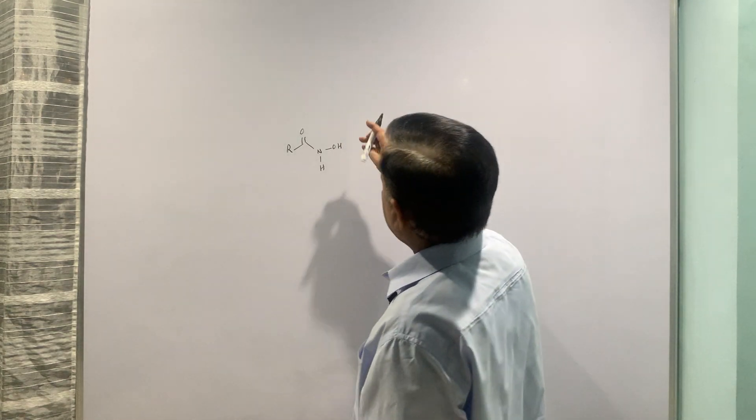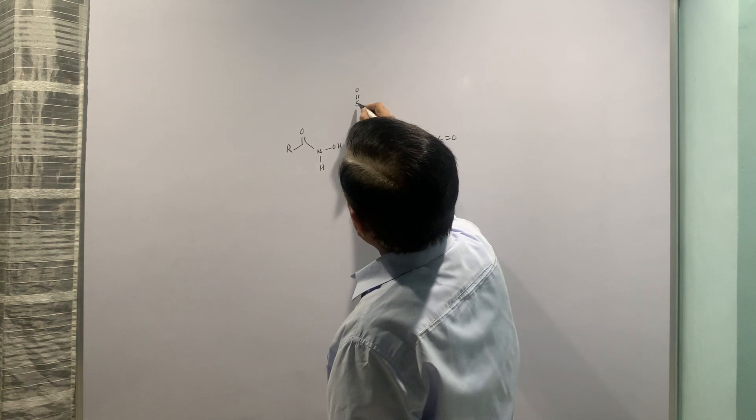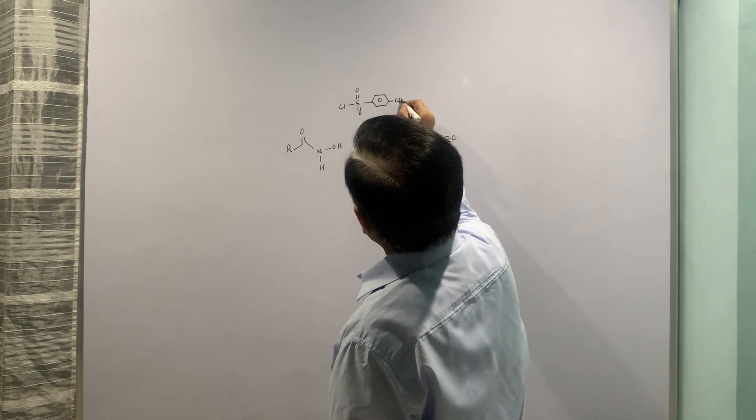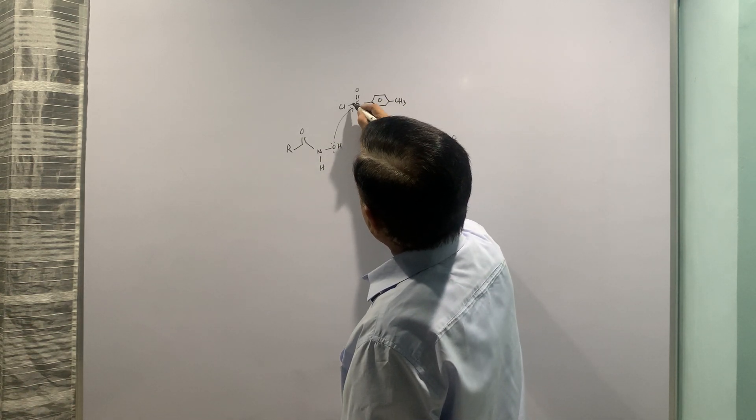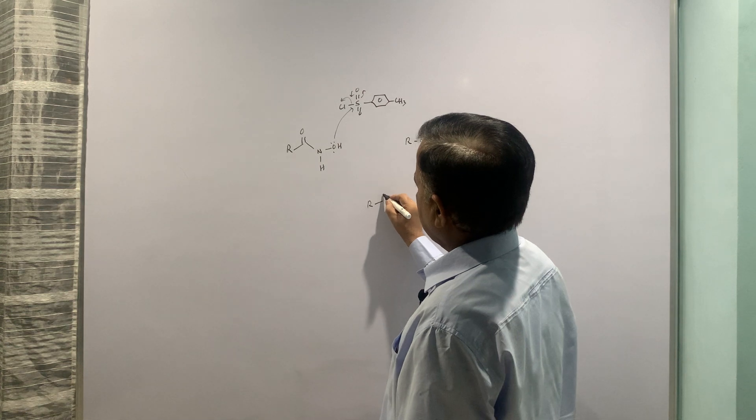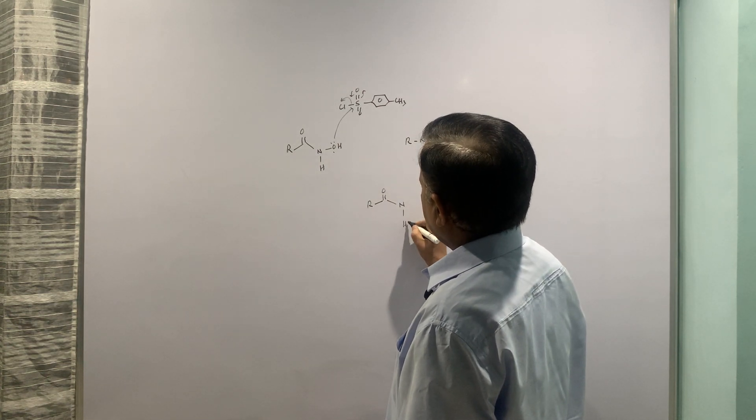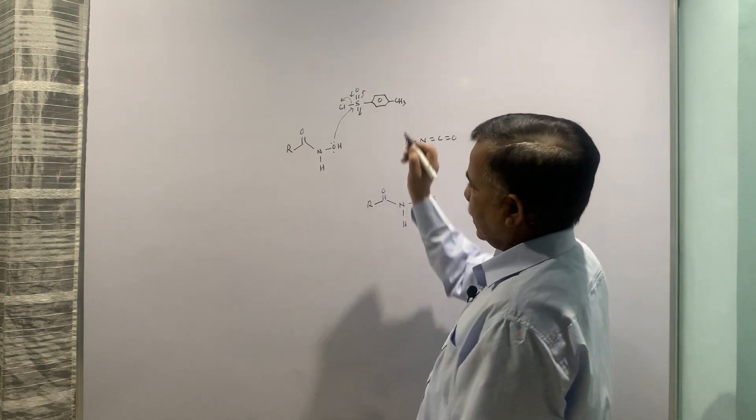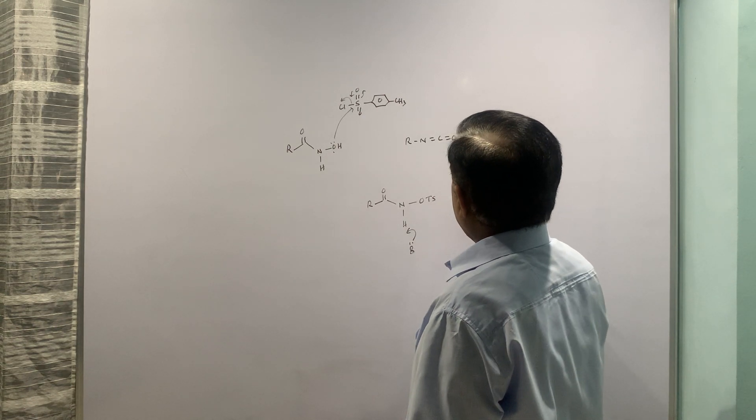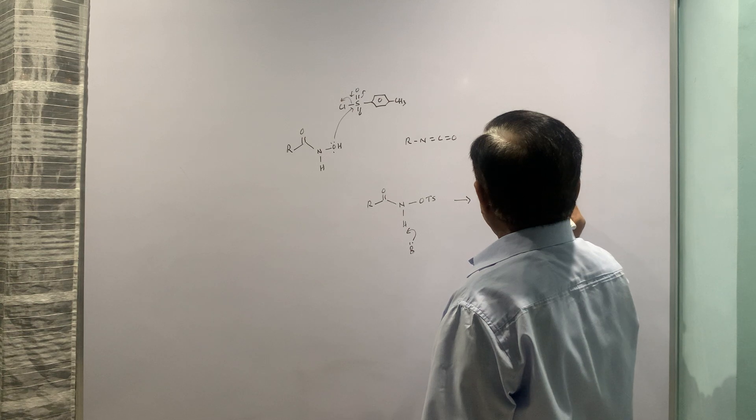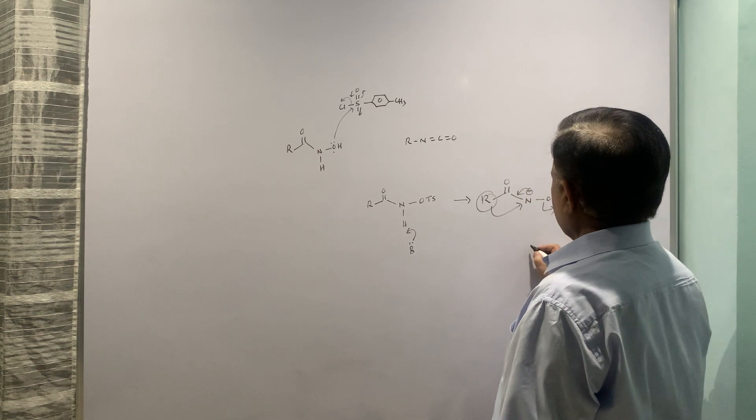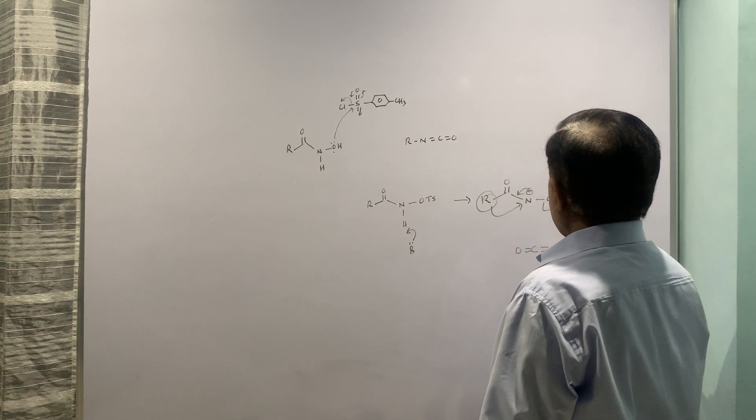Let me put that structure here. This is para-toluene sulfonyl chloride. This acts as a sink and R-CO-NH-O-Ts. Now Ts is that entire group. When base is there, base will abstract this. You will have R-CO-N- -O-Ts. This is very good leaving group. When this comes here, R migrates, O-Ts goes off and that is how you get the isocyanate.